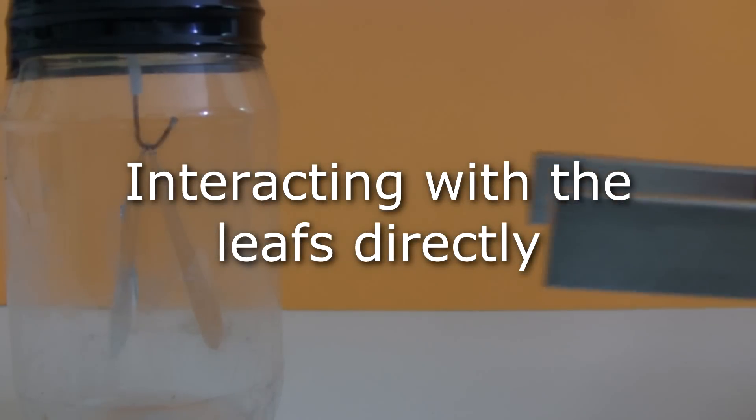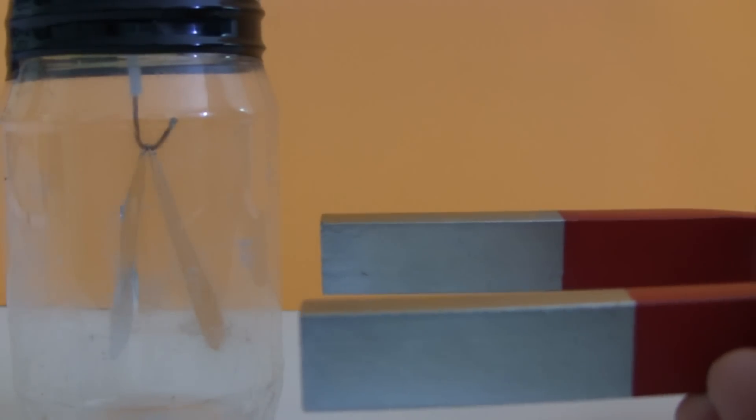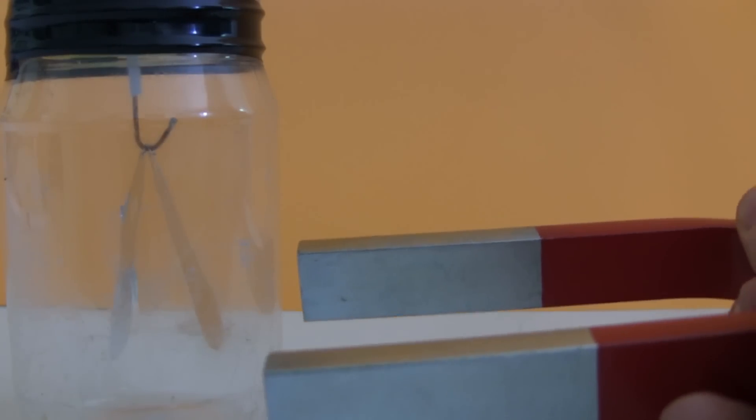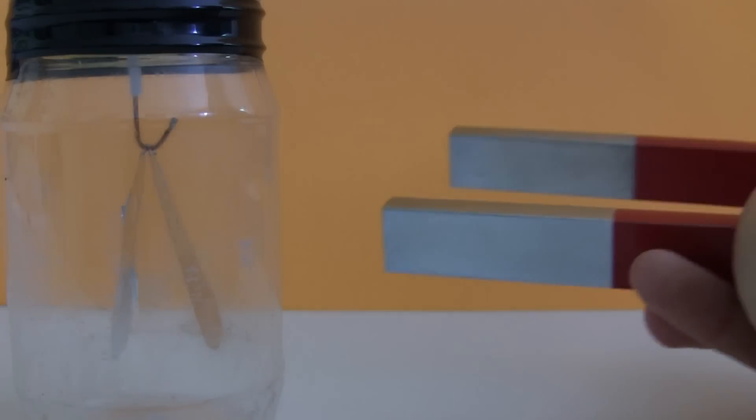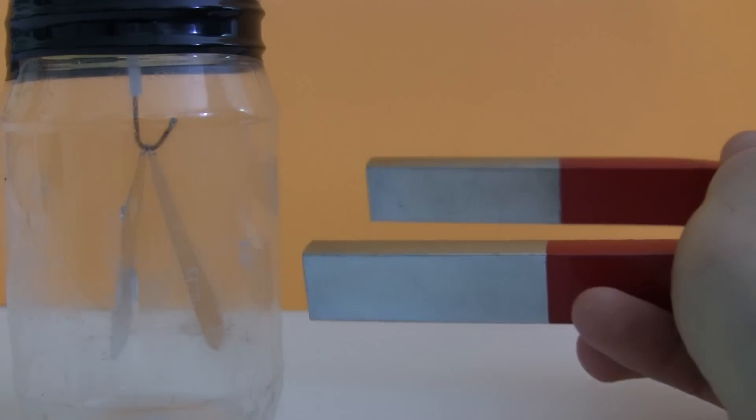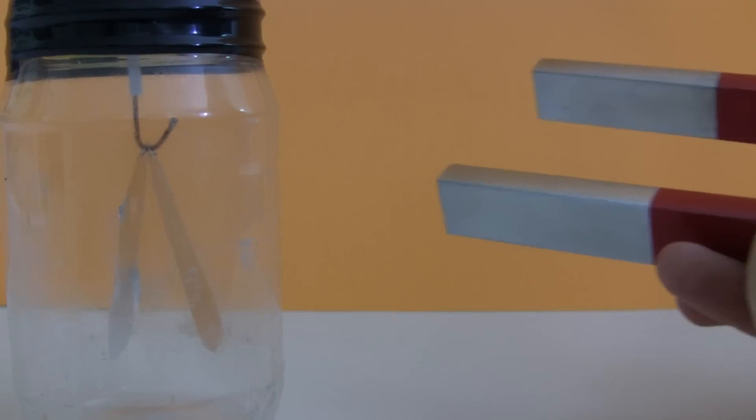So watch what happens to the foil leafs there as I bring the magnet close. You can see that there's an attraction. Both of them are being attracted to the leg of the magnet. If I use the other leg, I get the same sort of attraction. So it doesn't seem to have anything to do with the poles, and in fact it has nothing to do with the fact that it's a magnet at all.